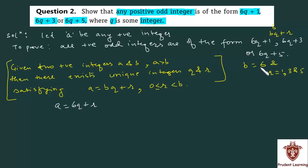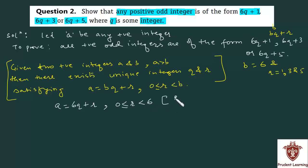Applying Euclid's division algorithm to a and b, we can write a is equal to 6q plus r, where r is greater than or equal to 0 and less than 6.